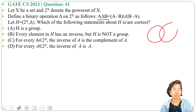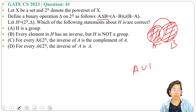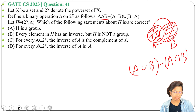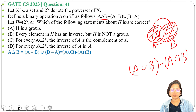First, let's understand the binary operation delta. Suppose we have two sets A and B. Then A minus B will be one shaded part and B minus A will be another shaded part. So A delta B will be A union B minus A intersection B. That is, A delta B equals (A minus B) union (B minus A), which equals A union B minus A intersection B.